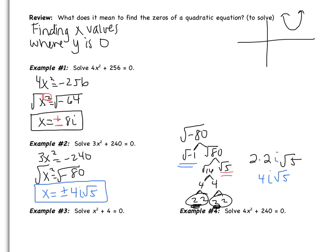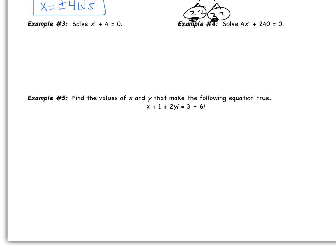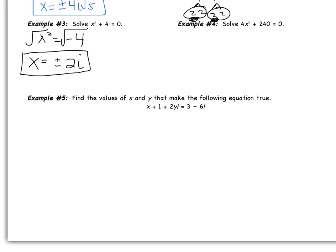Take a minute and try example 3 on your own — pause the video and come back when you are finished. We should have started by subtracting 4, so we get x² = −4. Taking the square root: the square root of 4 is 2, and we have an i because of the negative, with positive and negative. So you should have gotten ±2i. Now pause the video and try example 4 on your own. You should have gotten ±2i√15. If you didn't get that, you need to go back and find your mistake.